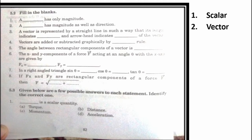A vector is represented by a straight line in such a way that its length indicates, when you represent the vector, what is the representation of vector? It shows magnitude and the head shows direction of the vector.